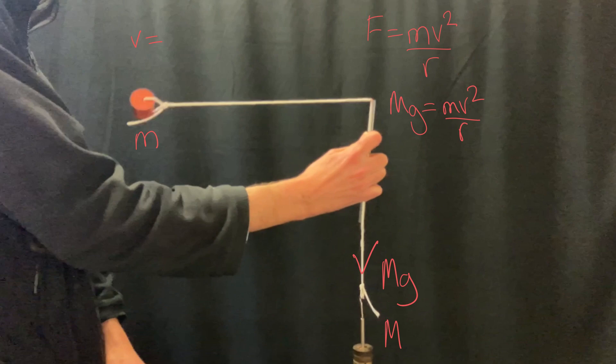Therefore we can say that v equals 2πr over T. If we then square this, we get that v squared equals 4π²r² divided by T².